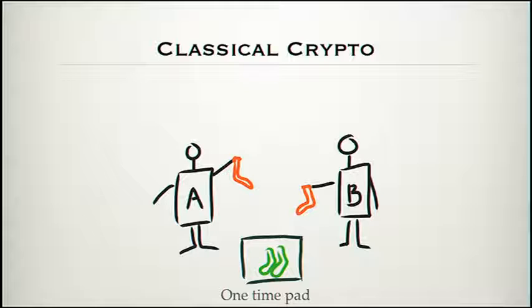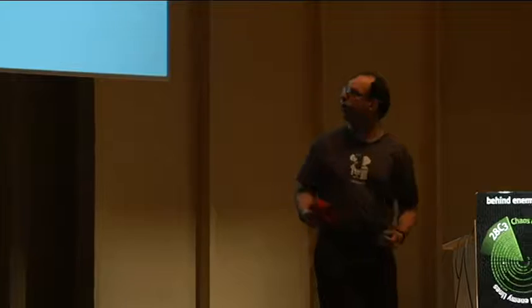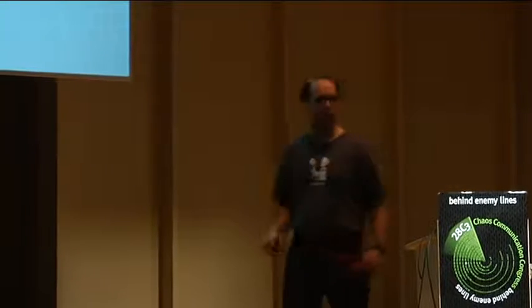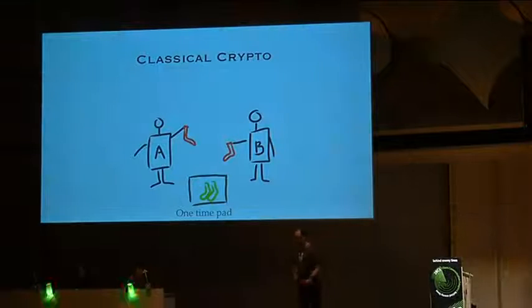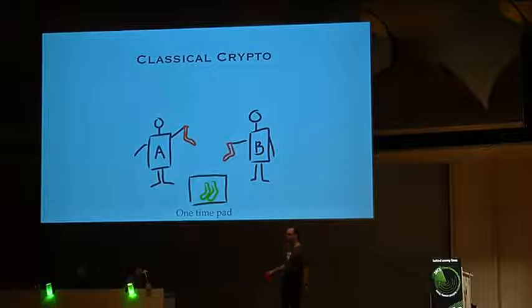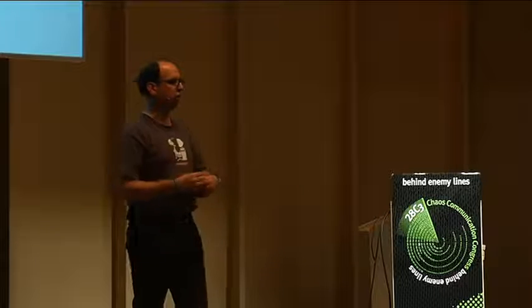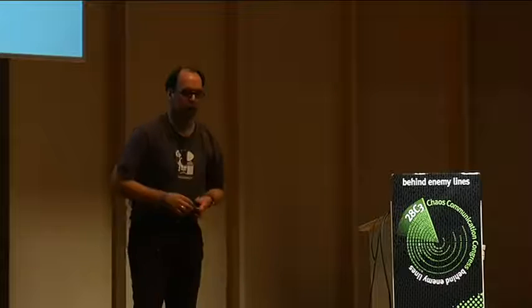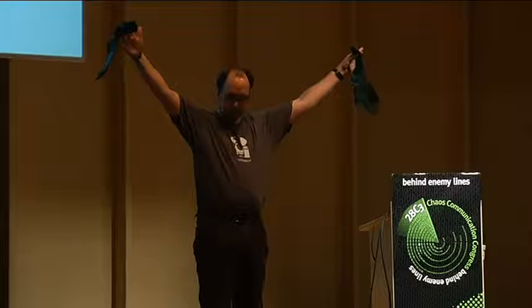So, classical crypto. Basically the essentials of classical crypto work like this. The archetypical example of cryptography is a one-time pad. Here are my friends Alice and Bob, and they want to transmit one bit of secret information. What they do is one of them, say Alice, turns off the light in her bedroom and goes to a drawer and picks a pair of socks. The nice thing about the socks is that she ordered them paired after washing, so there are either two red socks or two green socks.